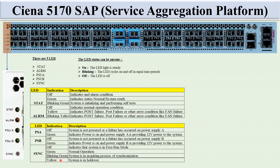PSU A has two LED indications. If off, the system is not powered on or a failure has occurred on Power Supply A. If green, it indicates the power is on and Power Supply A is providing 12V power to the system. The same LED indications apply to PSU B. The Sync LED has four indications: off means free run mode, yellow means holdover mode, blinking green means acquiring synchronization, and green means normal operation.